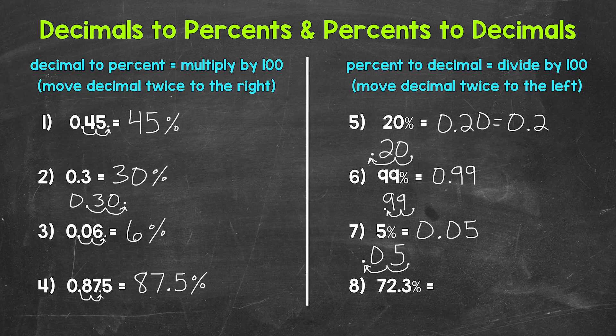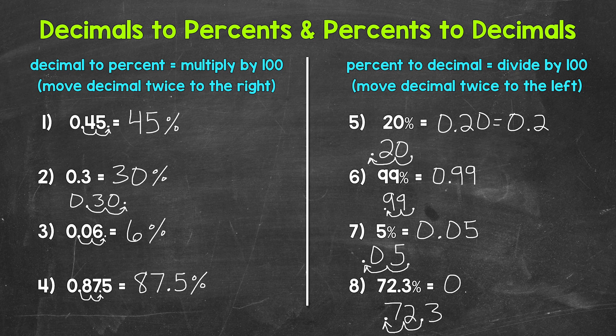Lastly, let's move on to number eight, where we have 72.3%. Let's rewrite this and move the decimal twice to the left — so we are dividing by 100. Once, twice. We end up with 0.723 — 723 thousandths. So 72.3% equals 723 thousandths.